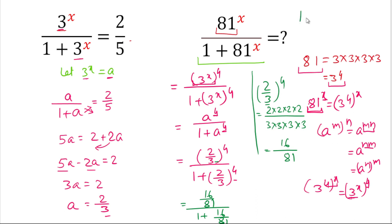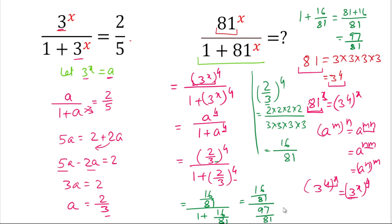Now we simplify the denominator: 1 plus 16 by 81. The LCM is 81, so we get (81 plus 16) divided by 81, which equals 97 by 81. So the expression becomes (16 by 81) divided by (97 by 81). To simplify, we multiply 16 by 81 by the reciprocal 81 by 97; the 81s cancel, giving 16 divided by 97.